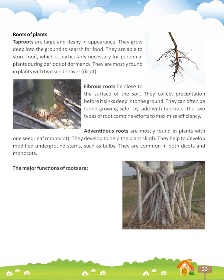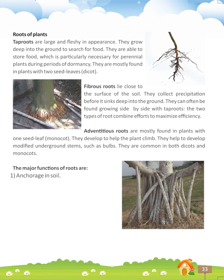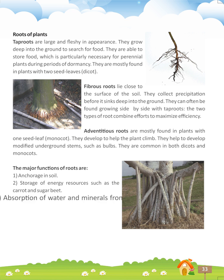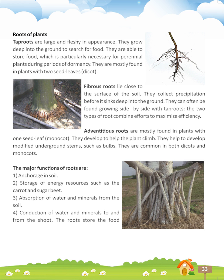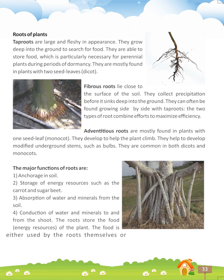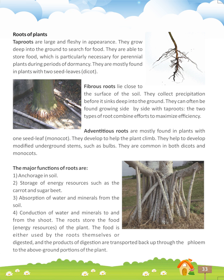The major functions of roots are: 1. Anchorage in soil. 2. Storage of energy resources, such as the carrot and sugar beet. 3. Absorption of water and minerals from the soil. 4. Conduction of water and minerals to and from the shoot. The roots store the food energy resources of the plant. The food is either used by the roots themselves, or digested and the products of digestion are transported back up through the column to the above-ground portions of the plant.